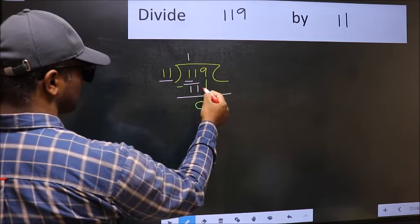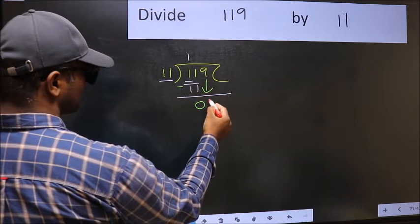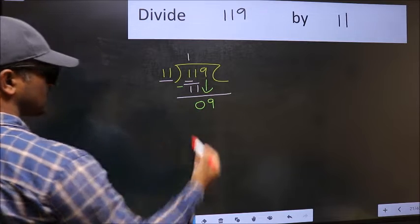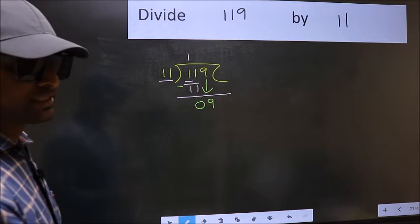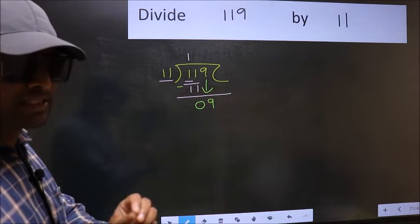After this, bring down the beside number, so 9 down. After this step, the mistake happens. And the mistake is this.